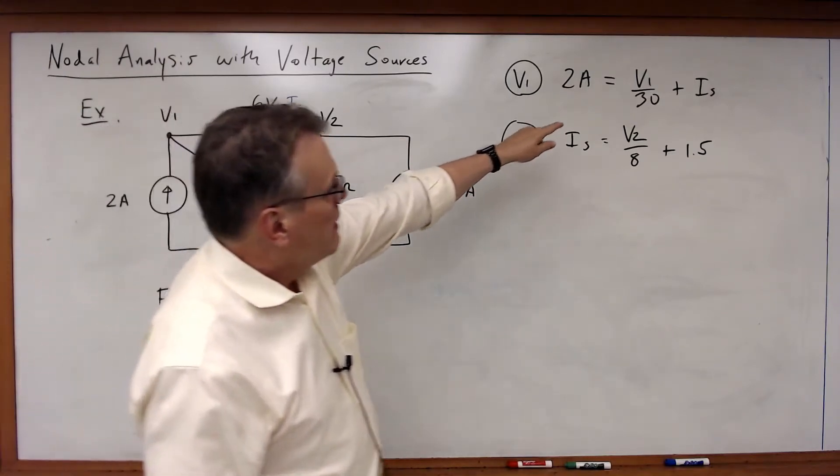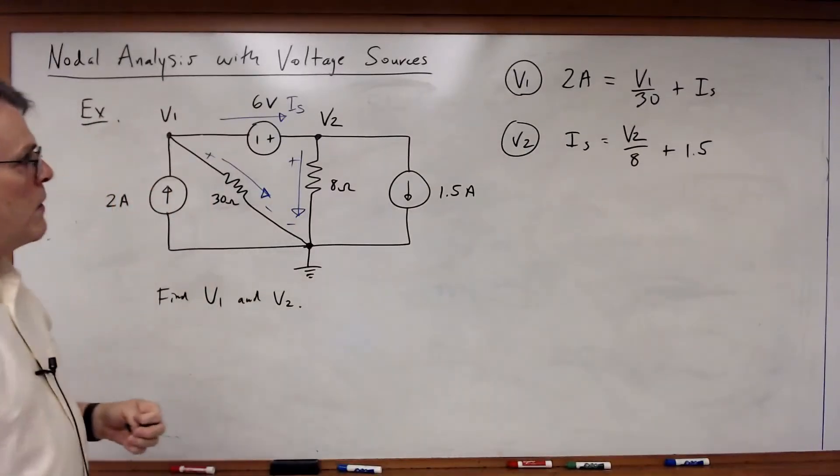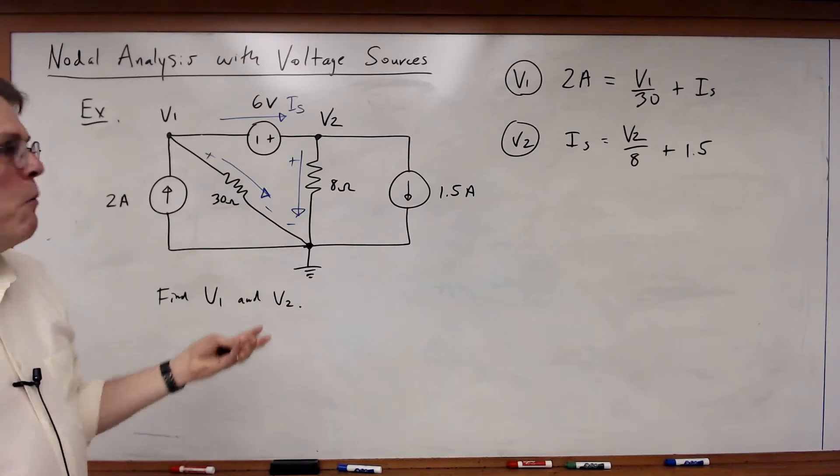And in this case I have to include that IS term in both equations. Now I still can't solve. I've got V1, V2, and IS. I've got three unknowns. I need another equation. What have I forgotten?